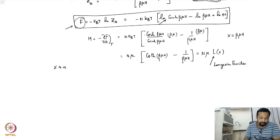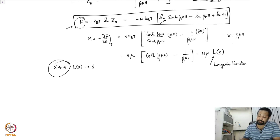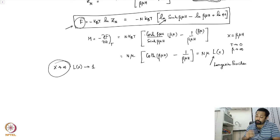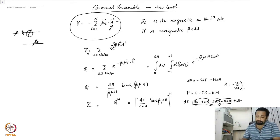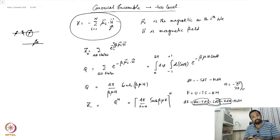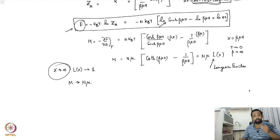As x tends to infinity, L(x) approaches unity. This limit of x tending to infinity means that the temperature tends to zero, so beta tends to infinity. So at very low temperatures, the magnetization tends to the limit N times mu — all the magnetic moments are pointed along the same direction, because there is not enough thermal energy in the system to make them fluctuate. The fluctuations are suppressed.